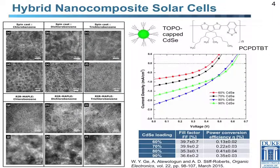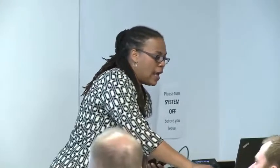We're using MAPLE to make organic-based solar cells, and something unique is the ability to make hybrid materials — films incorporating organic and inorganic components. One example combines an inorganic colloidal quantum dot with a polymer. Transmission electron microscopy images show that solution-based processing gives very different morphology depending on solvent, with clear segregation of components. With MAPLE films, results are independent of solvent, and there is very good mixing of the two materials. We're making solar cells out of these.